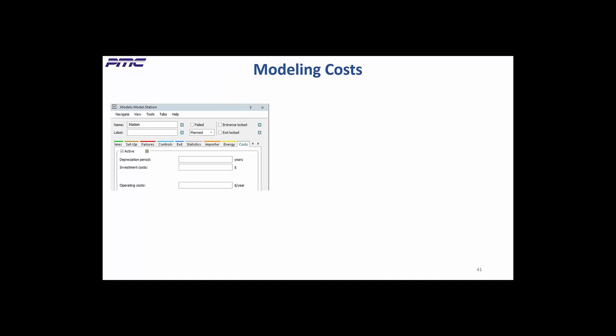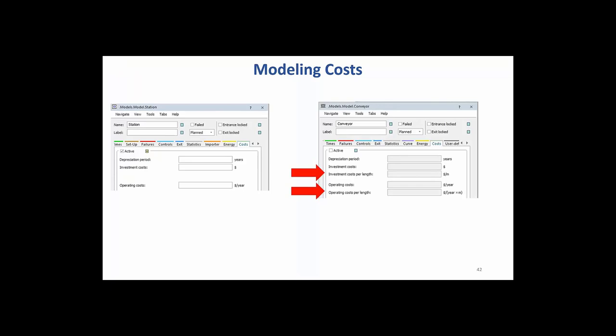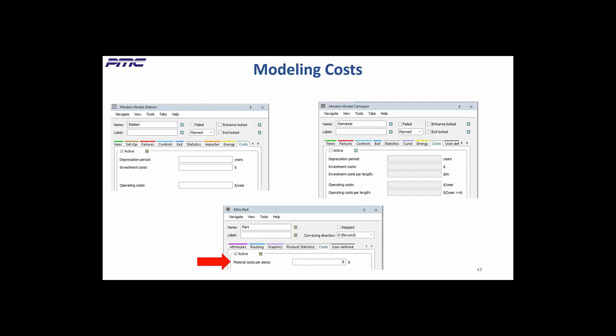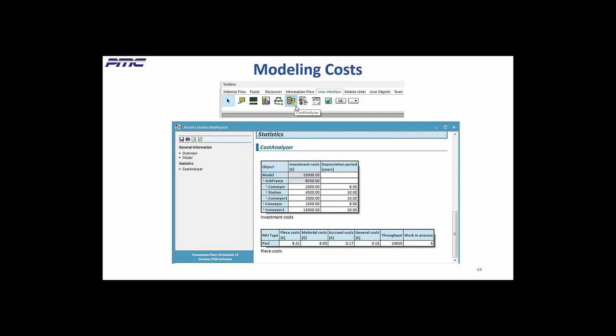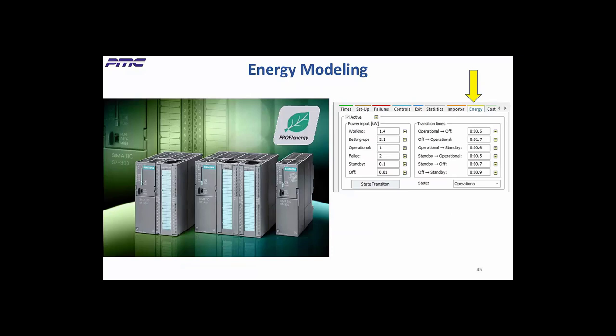Cost modeling is another feature now often included with discrete event simulation software, giving you the ability to factor in cost into your optimization goals. In Plant Simulation, the cost tab appears in the material flow objects. Non-length objects like stations, assembly stations, and robots have depreciation period, investment costs, and operating costs fields. Length-oriented objects like conveyors and tracks have two additional cost-per-length fields, and parts and containers have a material cost per piece field. The cost analyzer gathers costs and the HTML report shows total costs for the whole model and individual object costs.